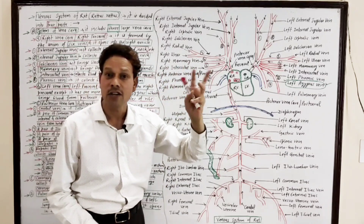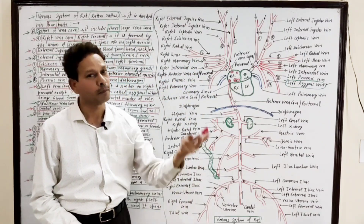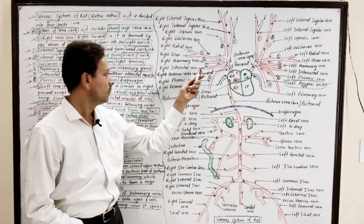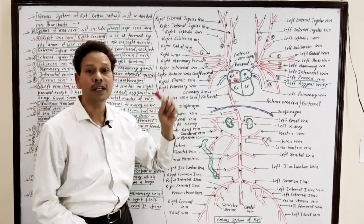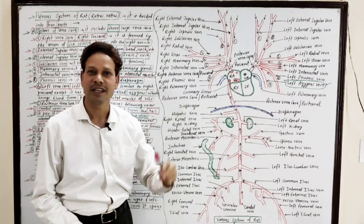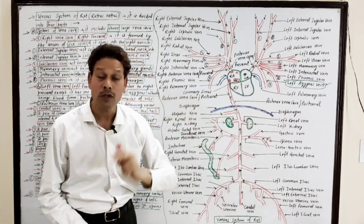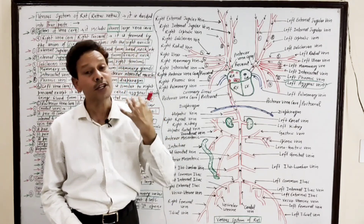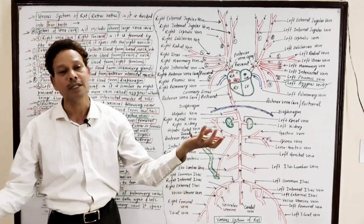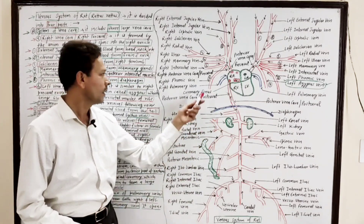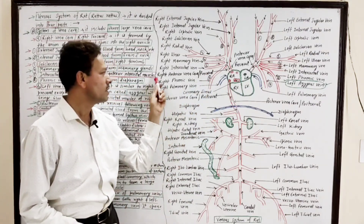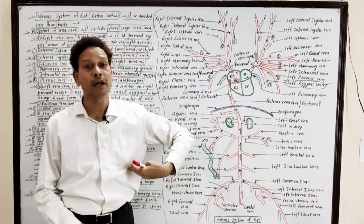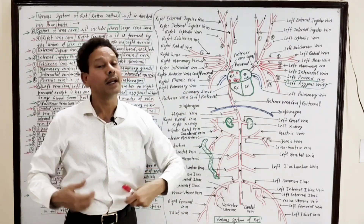The fourth blood vessel is the right mammary vein, which brings blood from the right side of the mammary glands. The fifth is the right intercostal vein, which brings blood from the anterior intercostal muscles of the ribs. And the sixth is the right phrenic vein, which brings blood from the diaphragm.